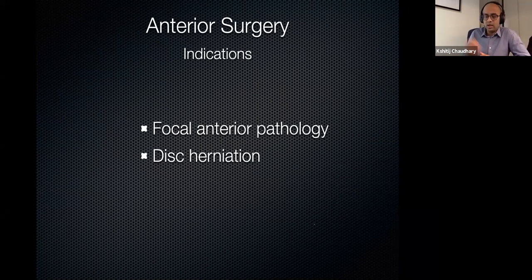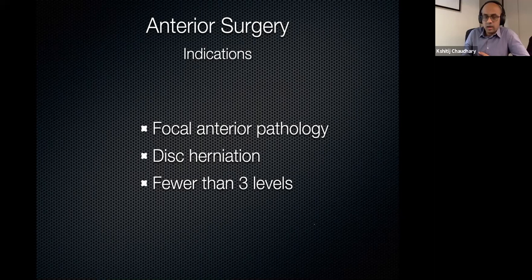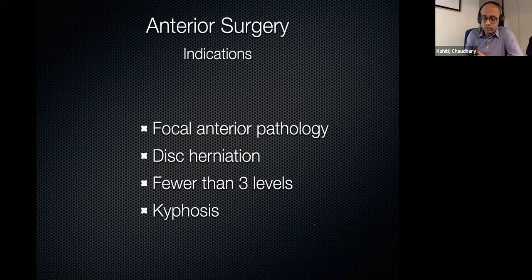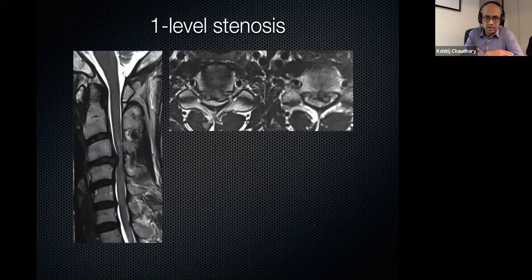The anterior surgeries are ACDF and corpectomies. For single-level stenosis, a single-level ACDF is the usual choice. With a soft disc herniation, the disc appears gray on MRI — not dark like OPLL. A single-level ACDF can be done with or without a plate, with a standalone cage or graft. With autografts in non-smokers, the fusion rate is very high. For two-level compressions, you can do either a two-level ACDF or a one-level corpectomy.